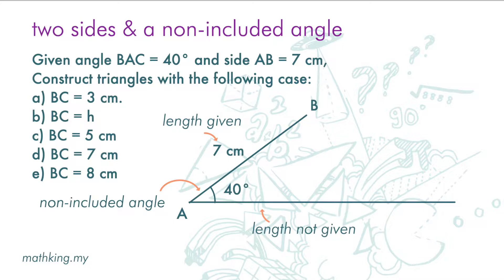If BC is 8 cm, which is longer than the side here, we can get only one triangle with the information provided.